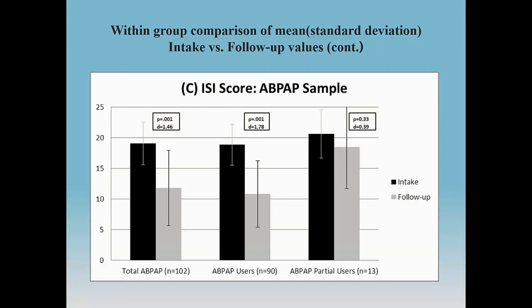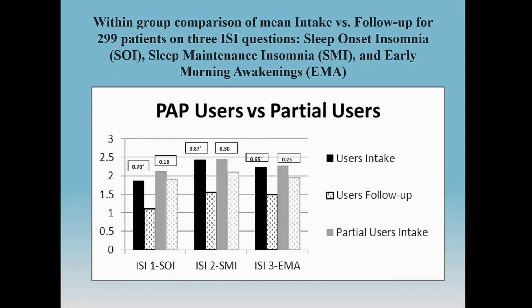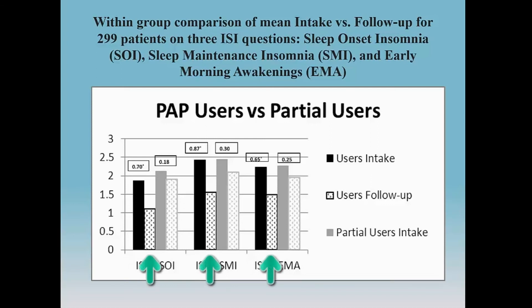The last slide breaks out the first three questions of the insomnia severity index, which specifically refer to SOI (sleep onset insomnia), SMI (sleep maintenance insomnia), and EMA (early morning awakenings). In each group, the black bar represents user intake and the next bar with polka dots is their follow-up. The largest improvement is seen across each of these dimensions — SOI, SMI, and EMA — for the regular PAP users. The partial users have some improvements, but not as much.